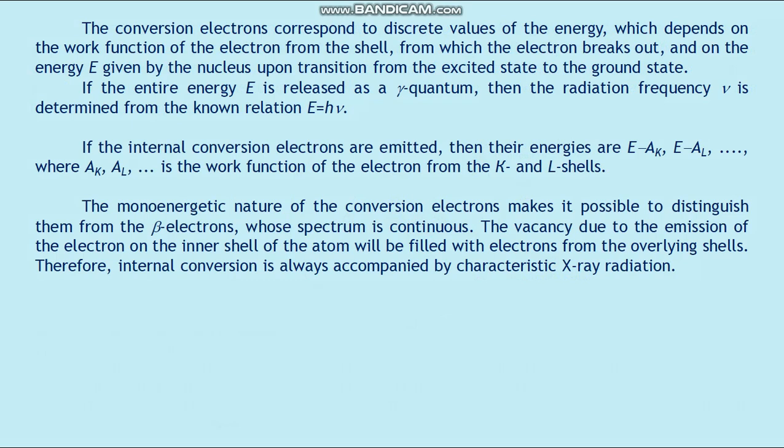If the entire energy E is released as a gamma quantum, then the radiation frequency is determined from the relation E = hν. If internal conversion electrons are emitted, then their energies are E − A_K, E − A_L, where A_K and A_L are the work functions of the electron from the K and L shells. The monoenergetic energy of the conversion electrons makes it possible to distinguish them from the beta electrons whose spectrum is continuous. The vacancy due to emission of the electron from the inner shell will be filled with electrons from the overlying shells; therefore internal conversion is always accompanied by characteristic x-ray radiation.